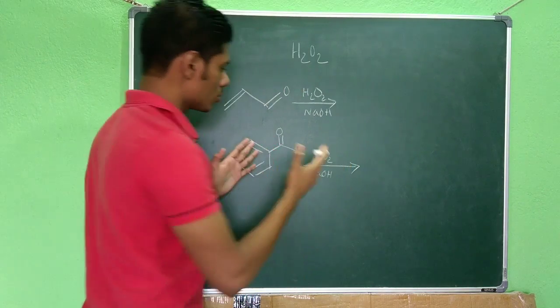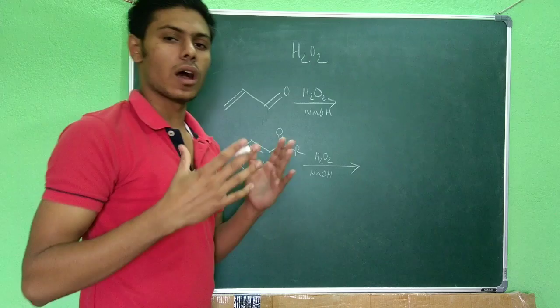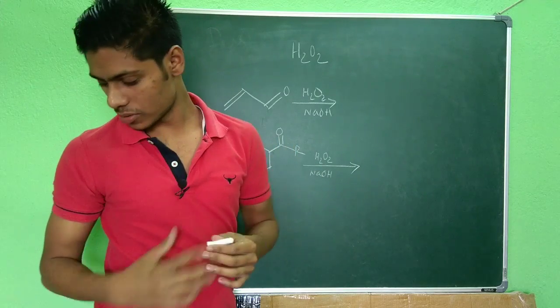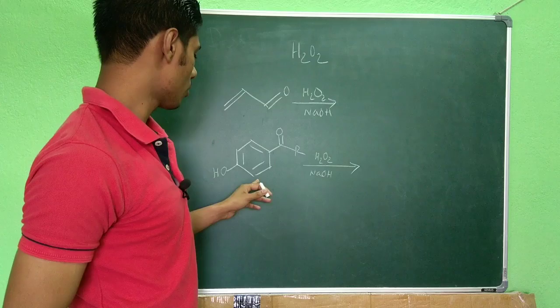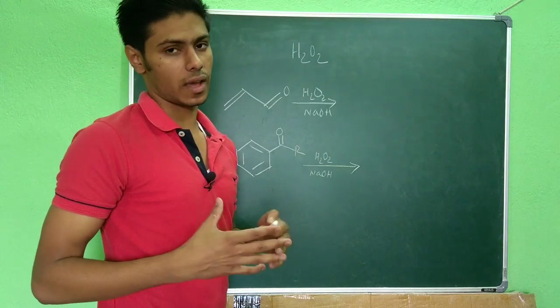So these two oxidations are very important reactions for H2O2, the hydrogen peroxide. The first one is the epoxidation reaction and second one is a name reaction which is called the Dakin reaction.